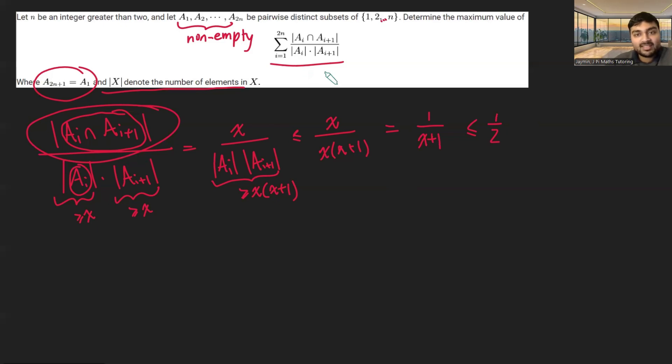So we know that this thing that we're summing up here is less than or equal to a half for each of the terms or each of the values of i. So it's going to be at most a half times 2n, which is n. Okay, great. So we've got an upper bound here to this sum.